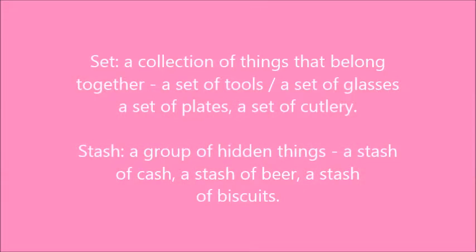It's up to you. Set: a collection of things that belong together — a set of tools, a set of glasses, a set of plates, a set of cutlery. Stash: well, that's for hidden things — a stash of cash, a stash of beer, a stash of biscuits, a stash of chocolate, a stash of sweeties.